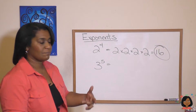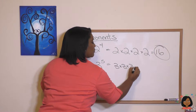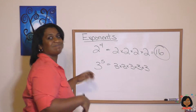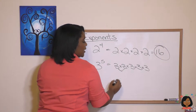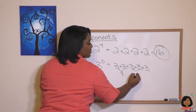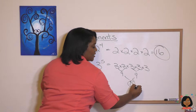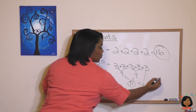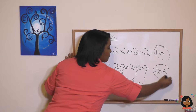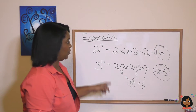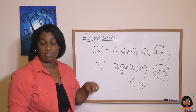What about three to the fifth? It means three times three times three times three times three. Now let's do the math: three times three is nine, nine times nine is eighty-one, times this last three — three times one is three, eight times three is twenty-four — two hundred and forty-three. You don't have to do it numerically, just in a way that works for you. Two hundred and forty-three is our answer.